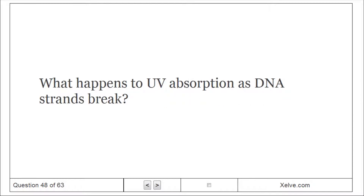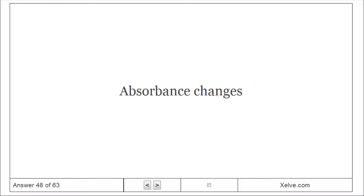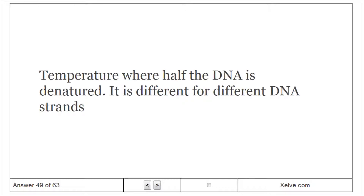What happens to UV absorption as DNA strands break apart (denature)? Absorbance increases. What is Tm? The temperature at which half the DNA is denatured; it differs for different DNA sequences.